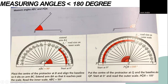For the second example, measure angle PQR. Place the center of the protractor at Q and the baseline along QP. Start at 0 degrees and read the outer scale — angle PQR equals 105 degrees.